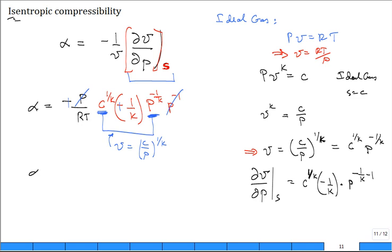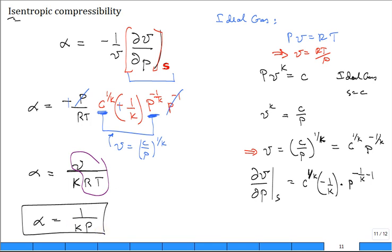So alpha is equal to V over K R T. And then the other one is somebody says, I think I can simplify this term right here. What is V divided by R T? So alpha is equal to one over K P. For what? An ideal gas. Isentropic compressibility of an ideal gas.